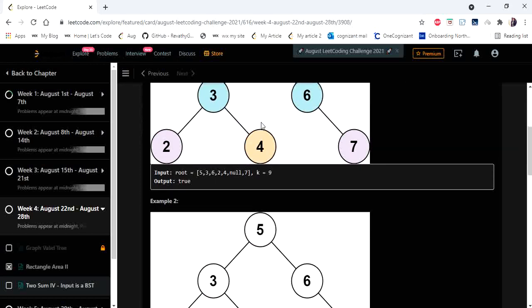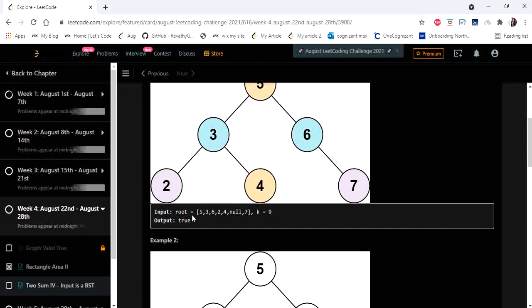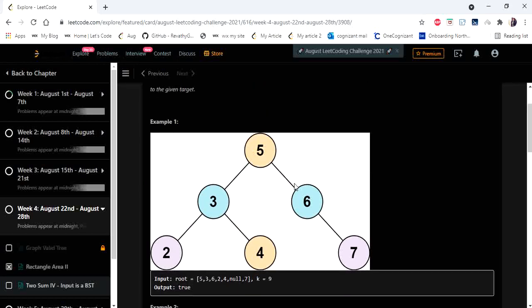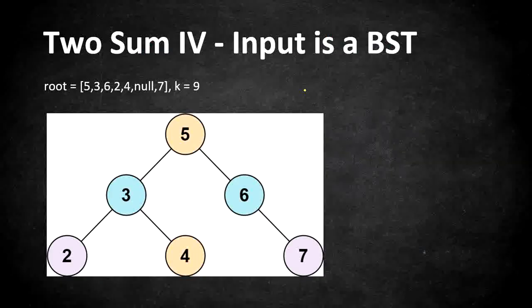So this is another binary tree problem where we have to return true or false if we can have two values which sum up to k. So let's understand this problem with an example. Here is a given example from the problem statement where the input is a binary tree and k is 9. We have to find any two elements or nodes whose value sums up to 9.